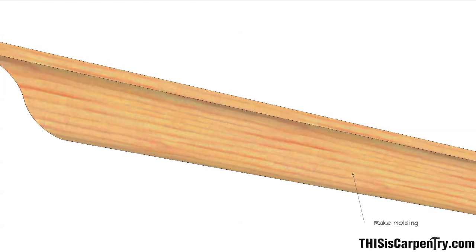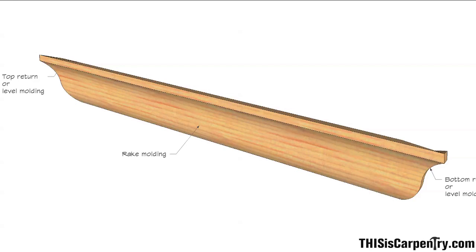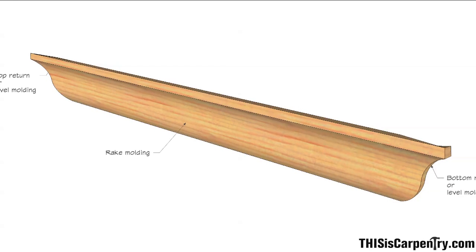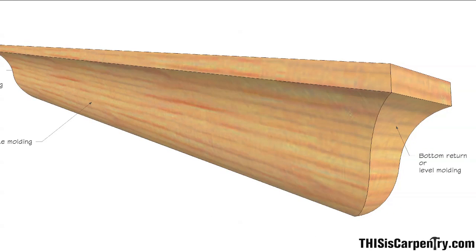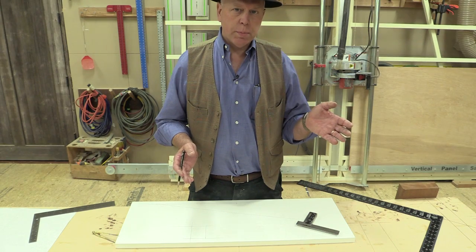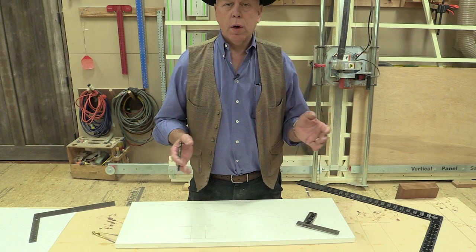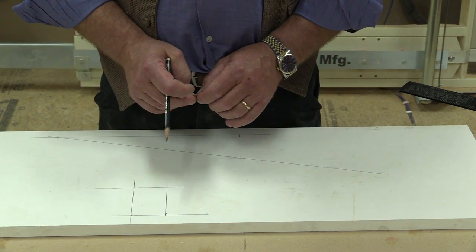We've chosen to start with the rake molding because that would most likely be the piece of molding we would buy — it's the longest piece. We want to only have to produce the two pieces that are short: the horizontal and the upper horizontal piece, we're going to make. So now we're going to determine the moldings on the rake.